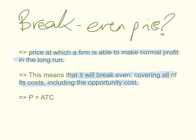The break-even price occurs where price equals average total cost, or average cost, in the long run. To summarise: the shutdown price is the level of output where price equals average variable cost and applies in the short run, while the break-even price applies in the long run and is the level of output where price equals average total cost.